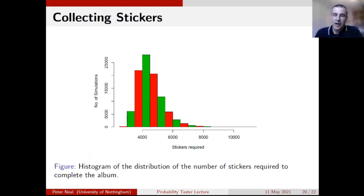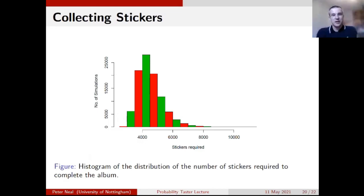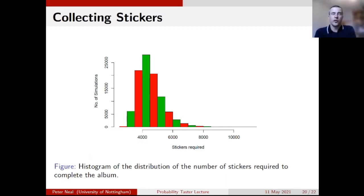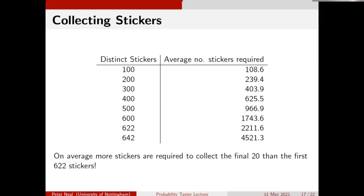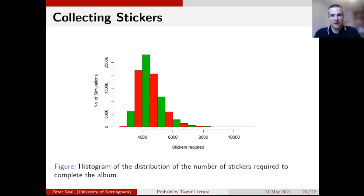Here's a histogram of the number of stickers required to complete the album from 100,000 simulations. In over 25,000 of those simulations — over a quarter of cases — between 4,000 and 4,500 stickers were required. The fewest stickers required was somewhere between 2,500 and 3,000. And there was one particularly unlucky case where it required about 12,000 stickers to finally complete the album.